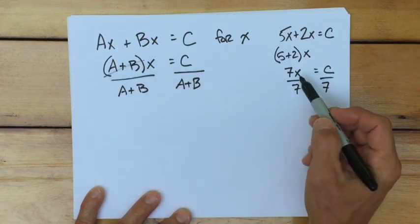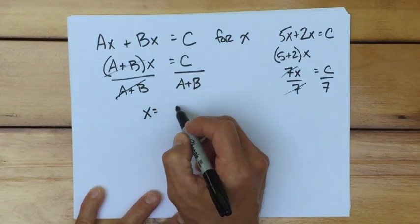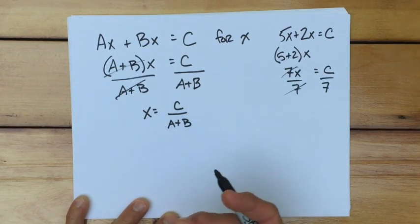Now, the a plus b, just like the 7's, would cancel out. I get x is c over a plus b. Now, we seem done, but there is something I need to add in. It's the idea of a restriction. Most of your teachers are going to expect you to understand restrictions. I'm going to expect my students to understand this as well.